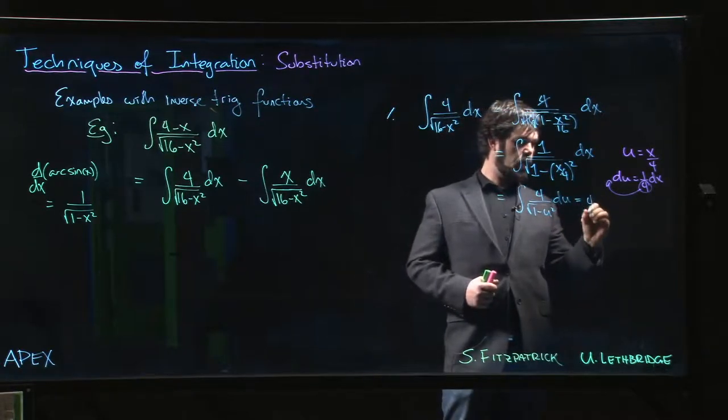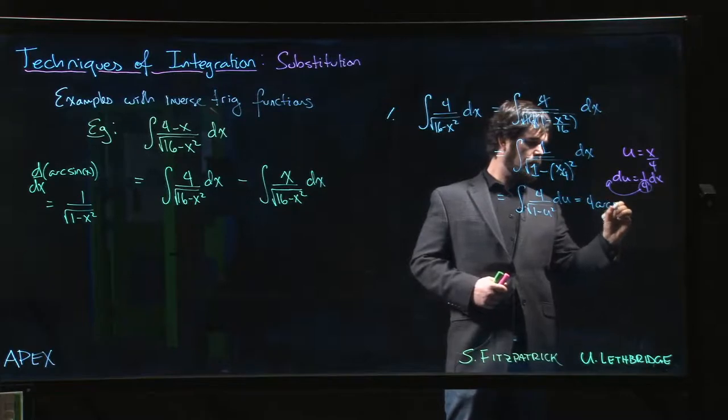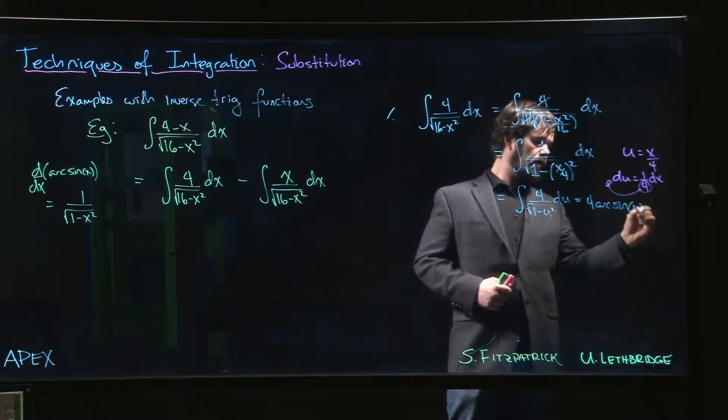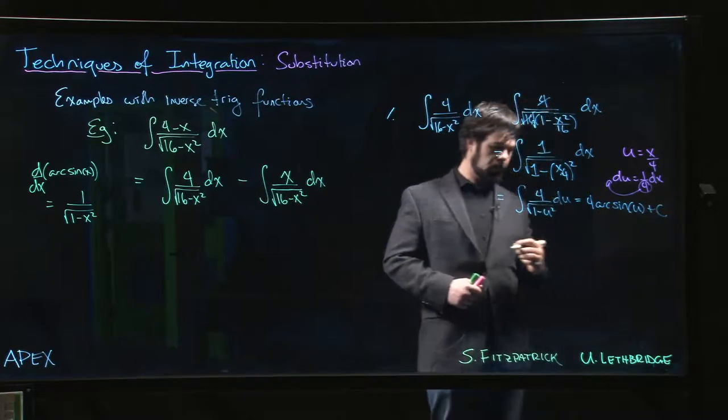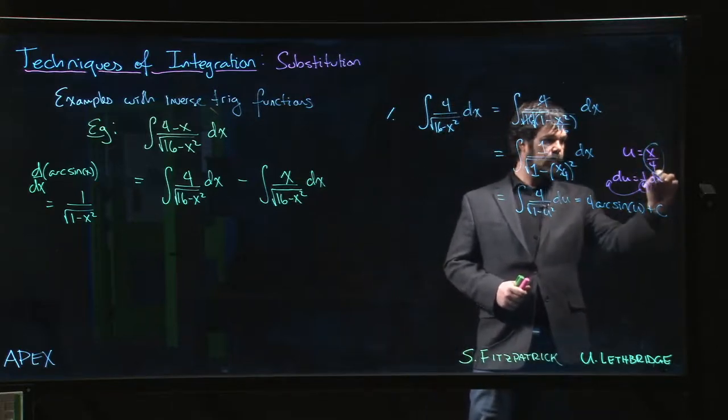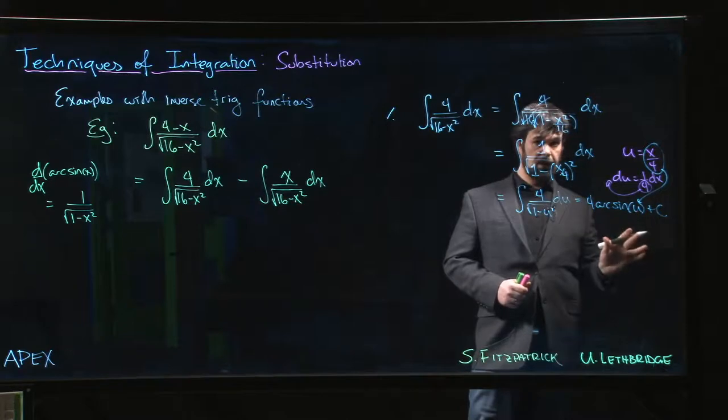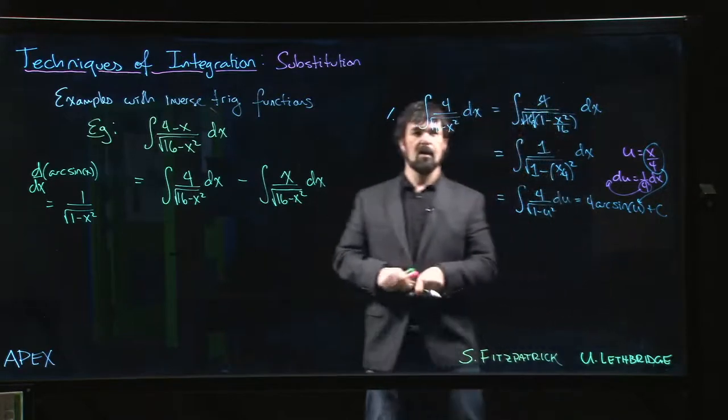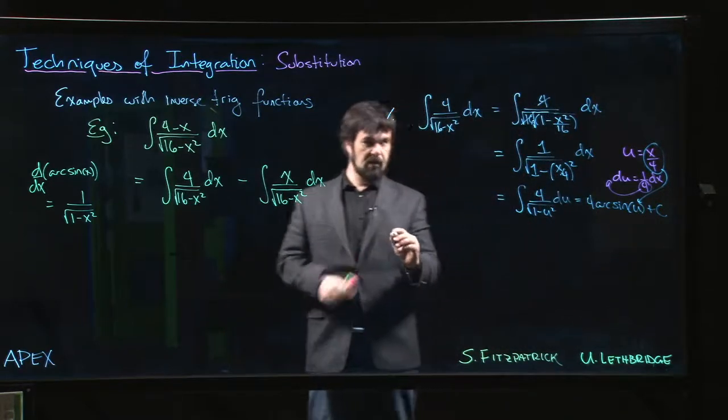So this is going to be 4 arcsine of u plus our constant. And the last thing to do is substitute in the x over 4, but we'll do that over there. Let's move on and look at the second integral.